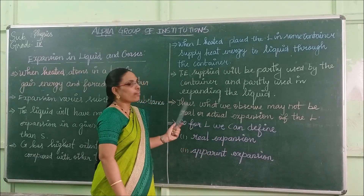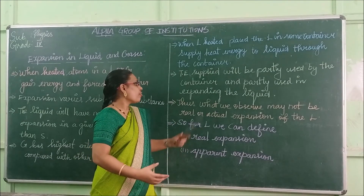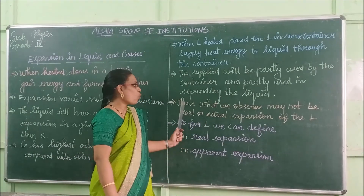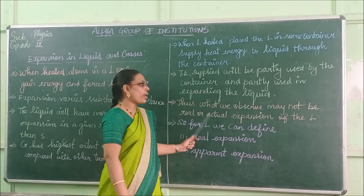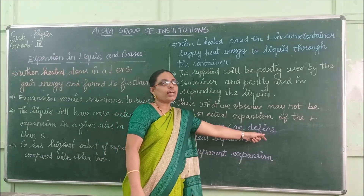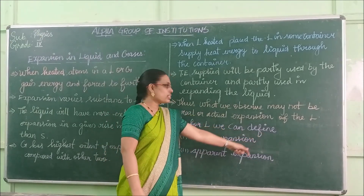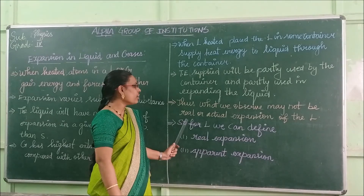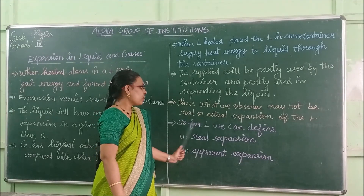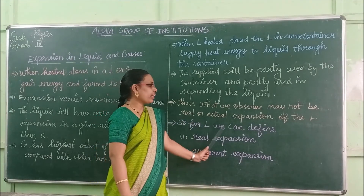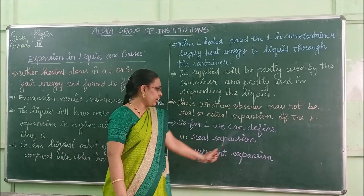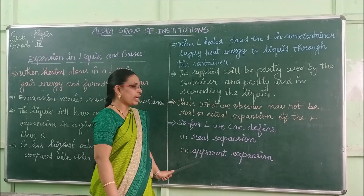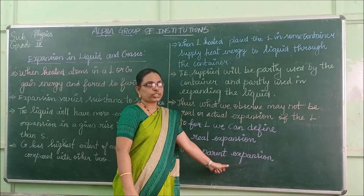We may not be able to conclude what is the real or actual expansion of the liquid from that observation alone. So, for liquid we can define expansion in two ways — that is, real expansion and apparent expansion.